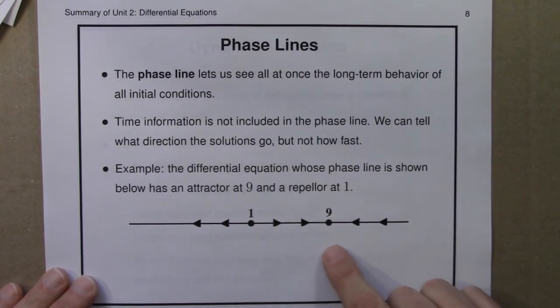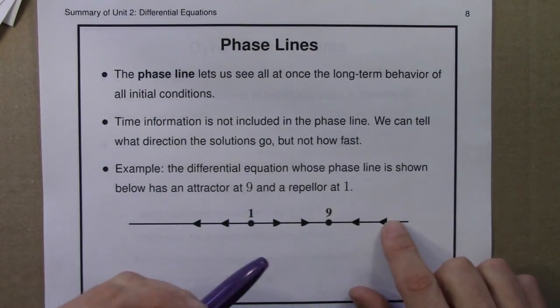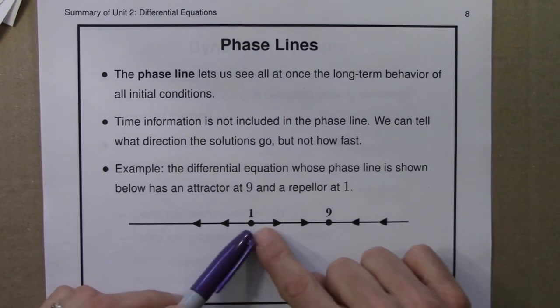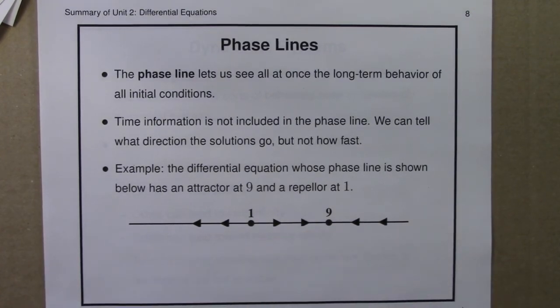The phase line here is for a differential equation that has an attractor at 9, things are getting closer to 9, and a repeller at 1, things are getting pushed away from 1.